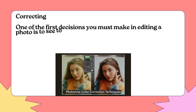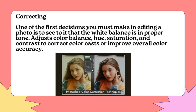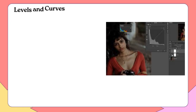Correcting: One of the first decisions you must make in editing a photo is to see to it that the white balance is in proper tone. Adjust color balance, hue, saturation, and contrast to correct color casts or improve overall color accuracy.